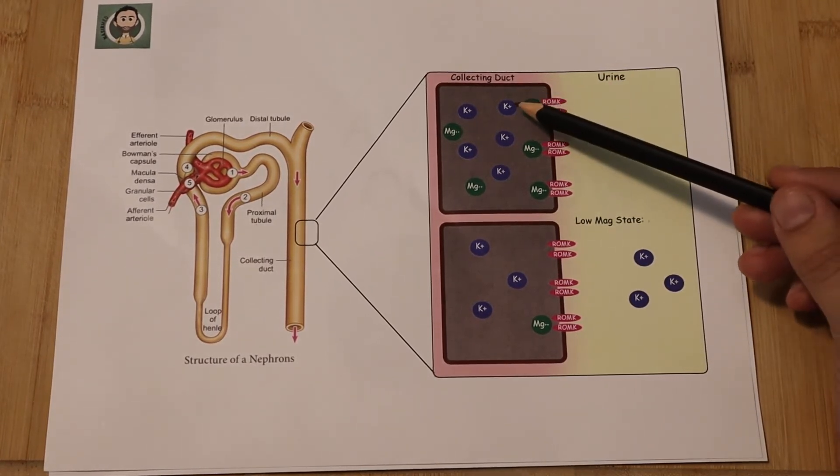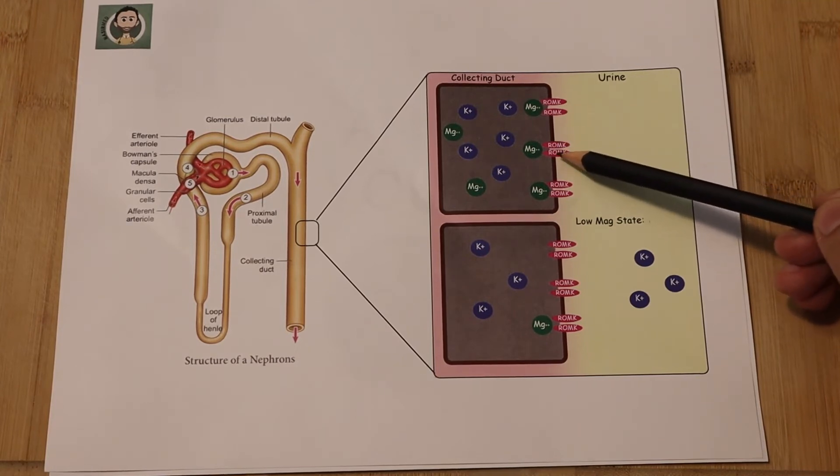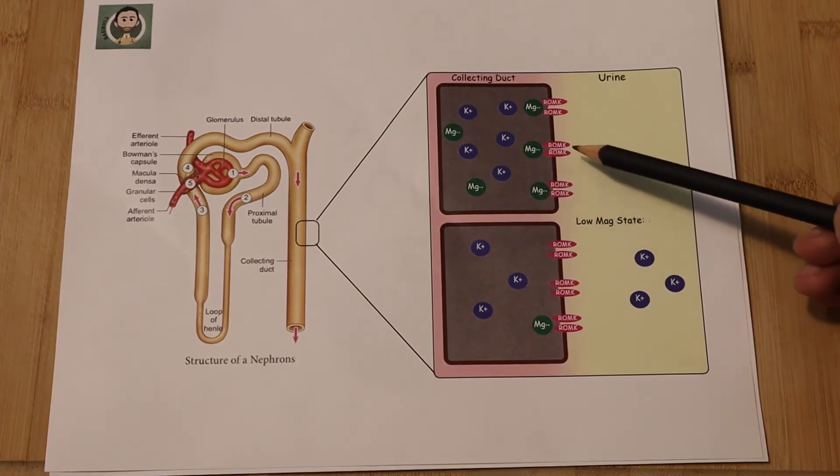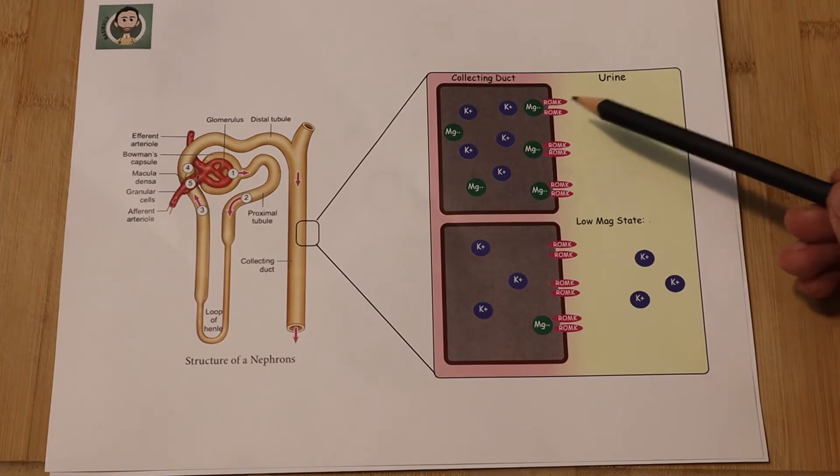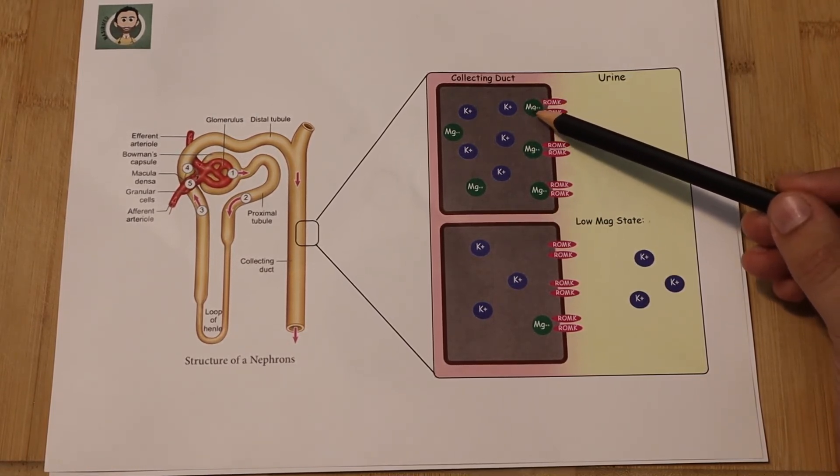But what regulates those potassium ions are channels called ROM-K channels. And you can think about ROM-K channels as a gate, and the gatekeeper for those gates is the magnesium ions.